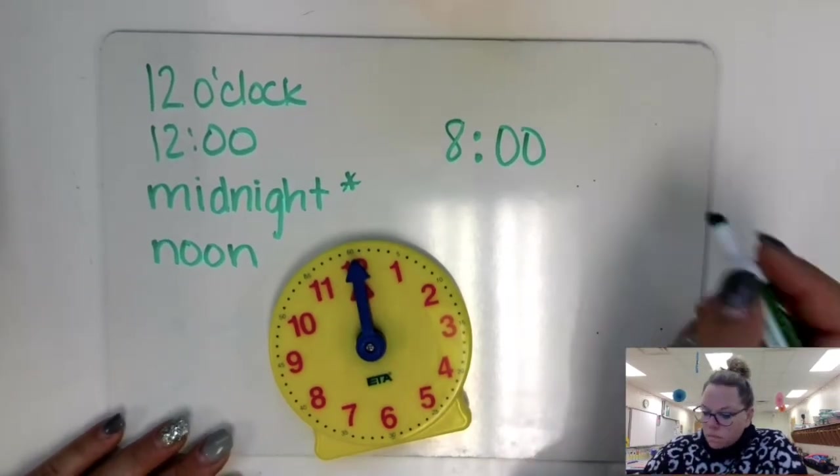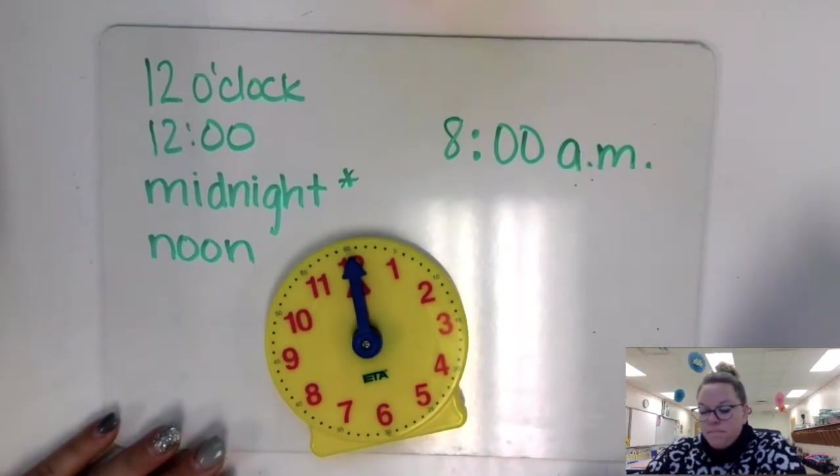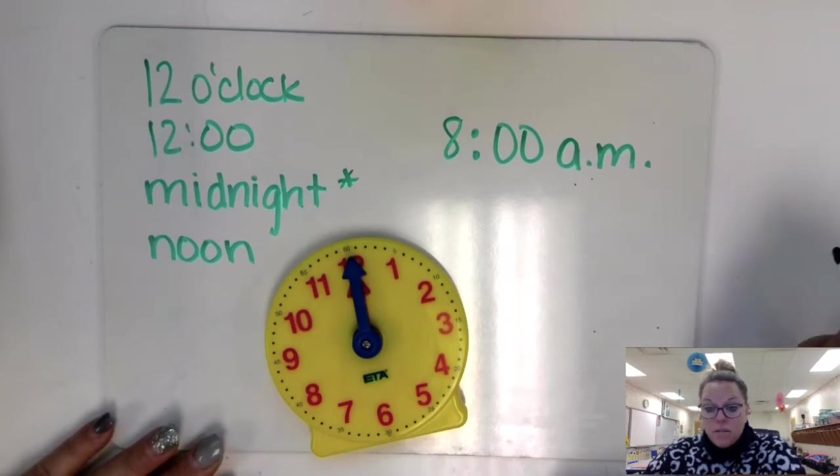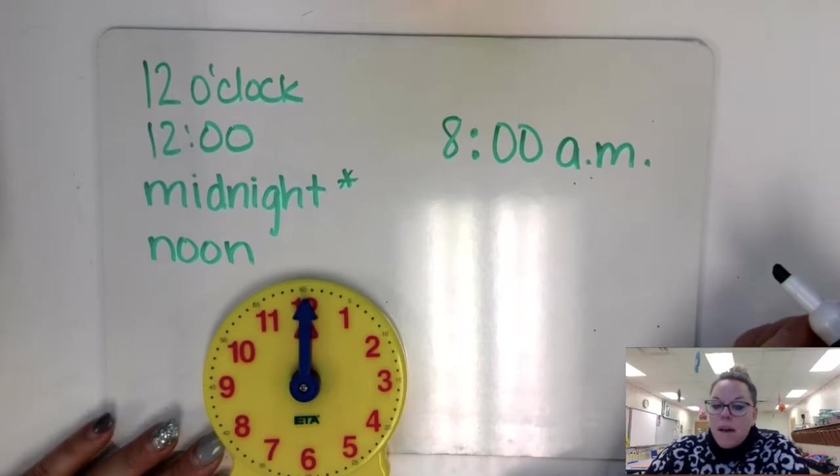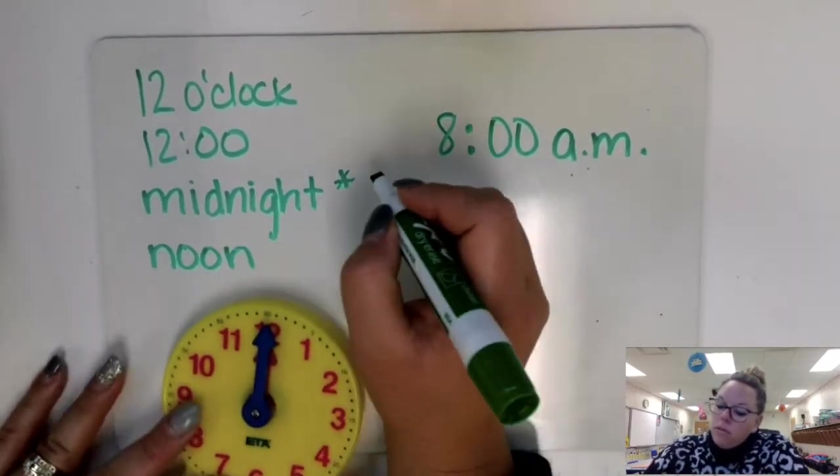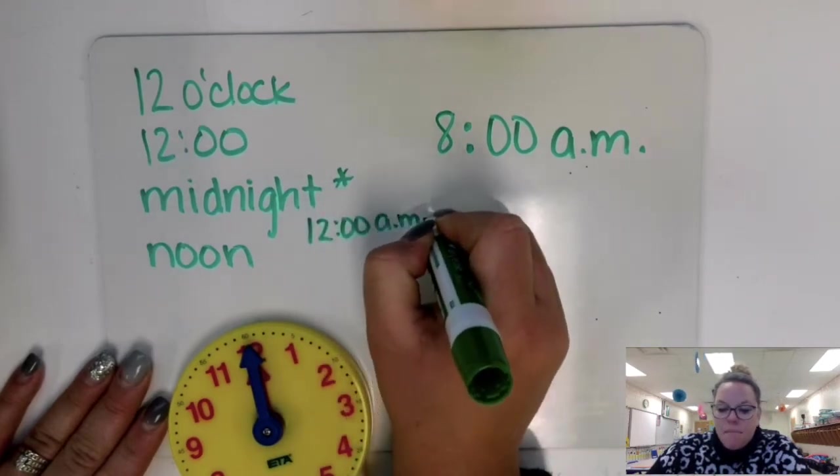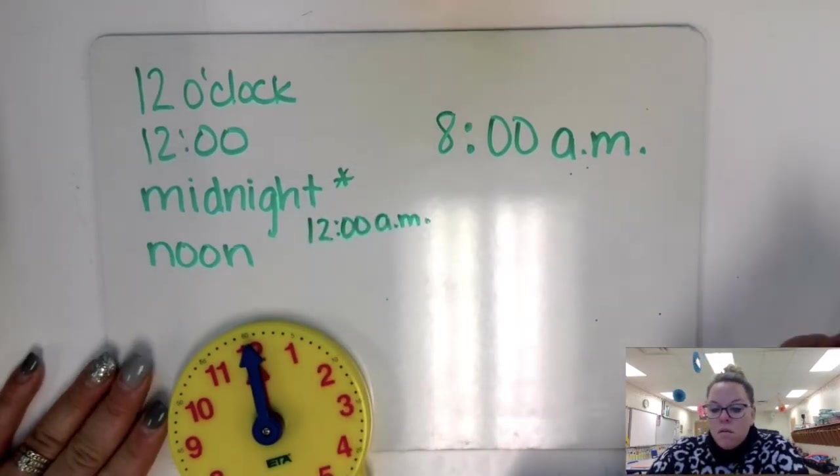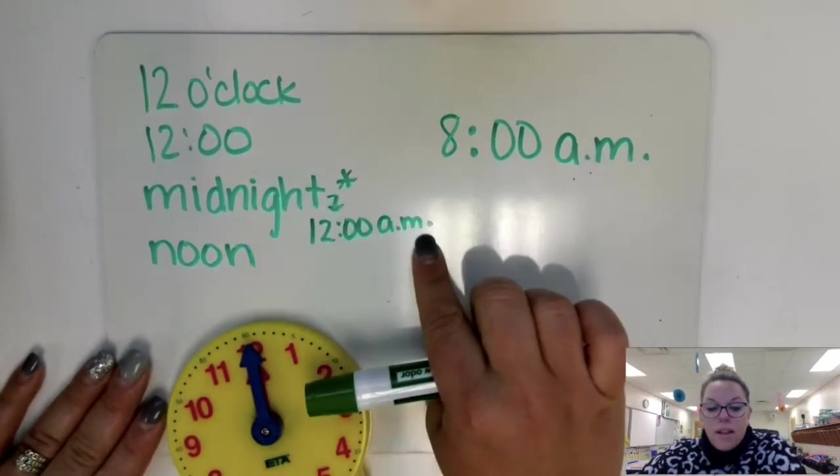Now, that would be eight o'clock a.m. Any time before noon is called an a.m. time. Many people call midnight 12 a.m., 12 o'clock a.m. So we have midnight is 12 o'clock a.m.